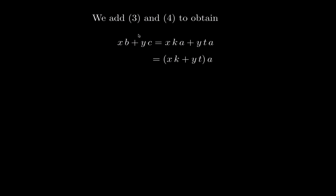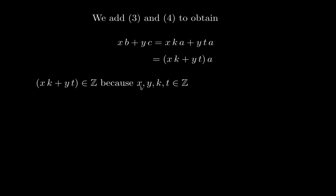The proof is complete if this expression equals an integer times a. We need (xk plus yt) to be an integer. It is an integer because x, y, k, and t are all integers — they come from our assumptions and the theorem statement. So xb plus yc is an integer multiple of a, which proves that a divides xb plus yc.